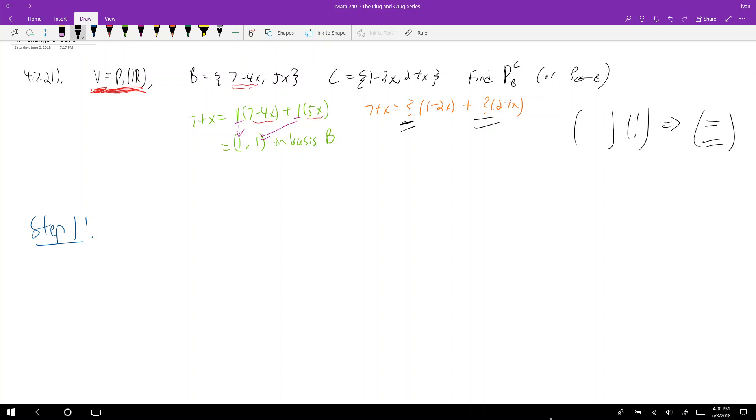So what does that mean? So I need to take 7 minus 4x, and 7 minus 4x is equal to some constant j1 times 1 minus 2x plus some constant j2 times 2 plus x. And I want to find what j1 and j2 are. Likewise, I need to take the second basis element, 5x, and I need to take 5x, and that is equal to k1 times 1 minus 2x plus k2 times 2 plus x. And I would like to find what k1 and k2 are.